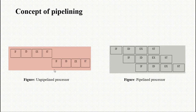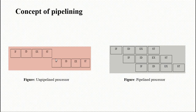Here we compare the non-pipeline concept with the pipeline concept. In the non-pipeline concept, we have four stages: Fetch, Decode, Execute, Store. One instruction goes through Fetch, then Decode, then Execute, then Store. Only after the first instruction is completed do we fetch the second one, then decode, execute, and store it, and so on for the third instruction. This is the non-pipeline concept, where throughput is very low and the time required to complete a set of instructions is very high.